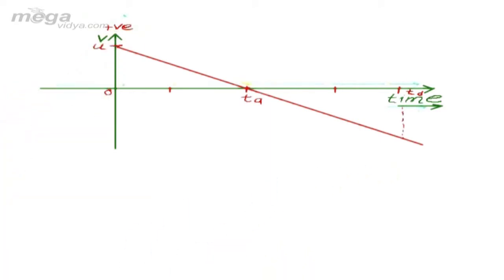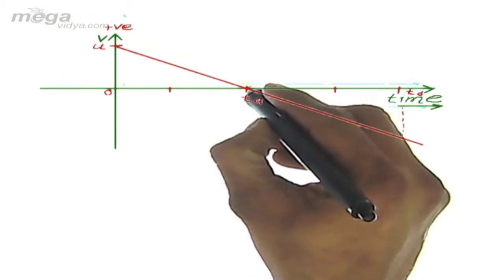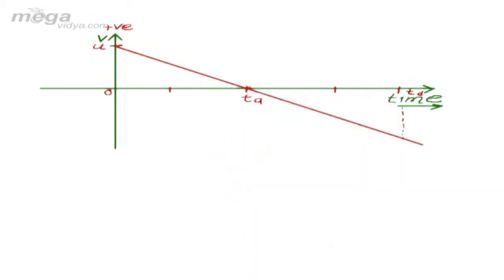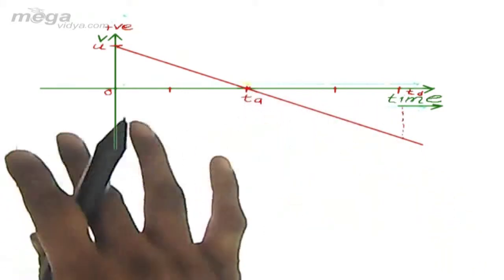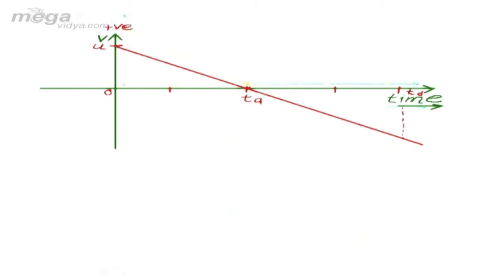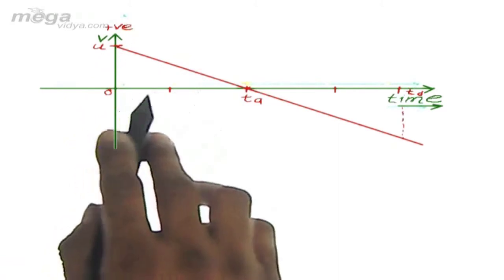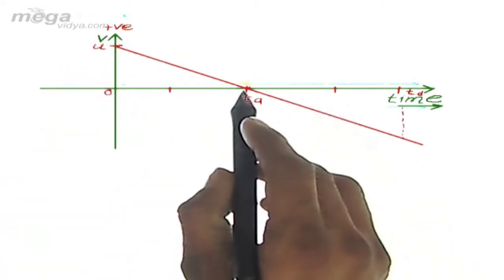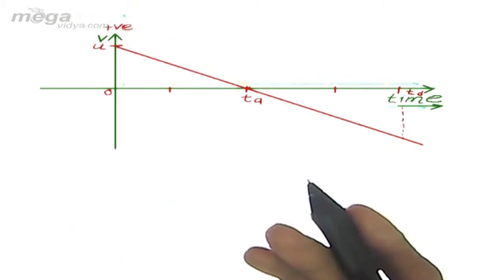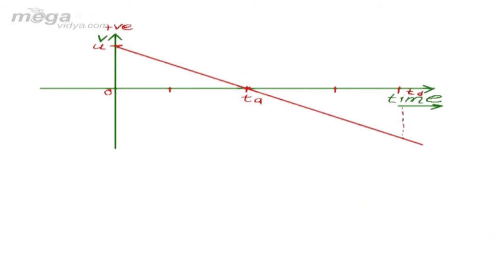As I have taken positive direction to be vertically upward and downward direction to be negative, while going in the upward direction, the particle's velocity was positive. When it reaches its maximum height, its velocity becomes 0 — at time ta, starting from t equal to 0 to time ta, till which it ascends in its path from the ground. When it reaches maximum height, its velocity becomes 0 for a moment and after that it starts falling downward.